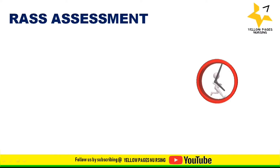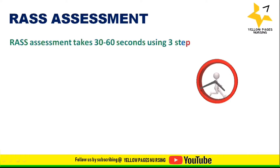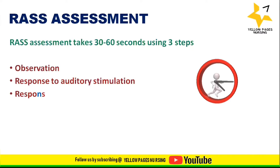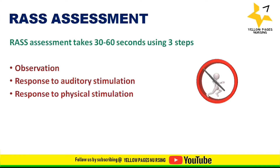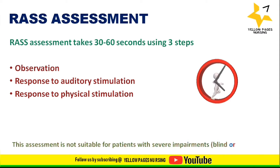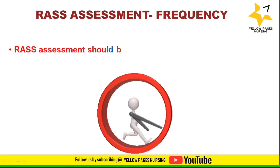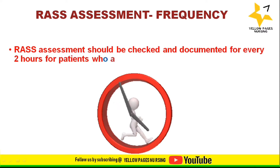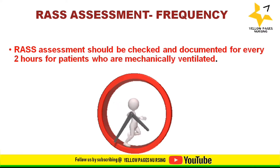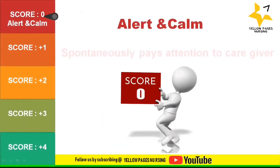RASS assessment usually takes 30 to 60 seconds with three steps: observation, response to auditory stimulation, and response to physical stimulation. This assessment is not suitable for patients with severe impairments like blind or deaf. RASS assessment should be checked and documented every two hours for patients who are mechanically ventilated.